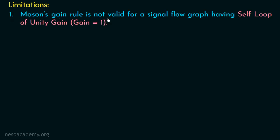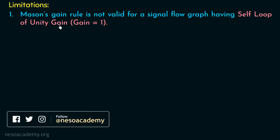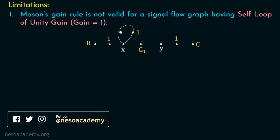The first limitation is: Mason's gain rule is not valid for a signal flow graph having a self-loop of unity gain, that is, gain equal to 1. Consider this signal flow graph having a self-loop with gain equal to 1. The input is R, the forward path gain is G1, the output is C, and there is one self-loop of unity gain present in this signal flow graph.